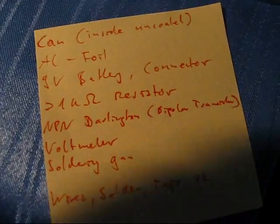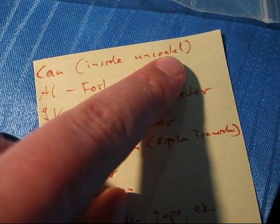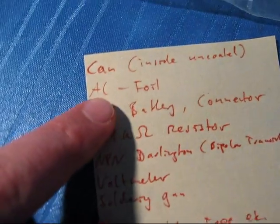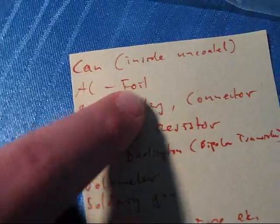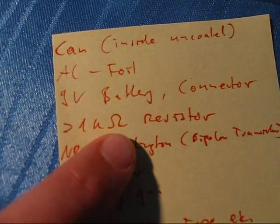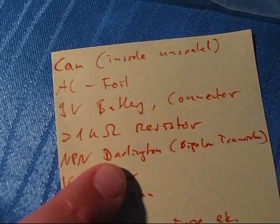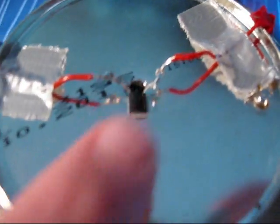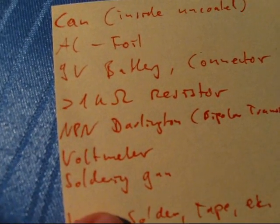So here's the shopping list. You need a can that is not coated on the inside, so it must be conductive on the inside. You need some aluminum foil or other type of foil to cover the front bit. You need a 9 volt battery with a connector. You'll need a resistor that is above 1 kOhm resistance. An NPN Darlington transistor, which is a type of bipolar transistor. You can just ask for that in the shop, I suppose.